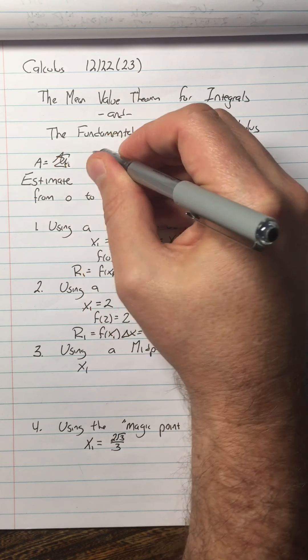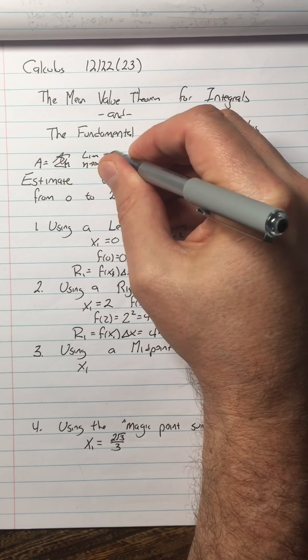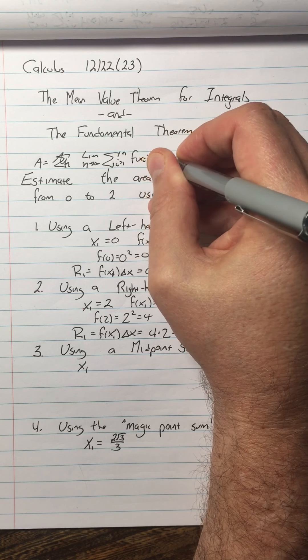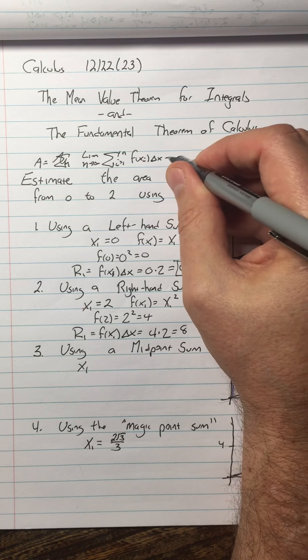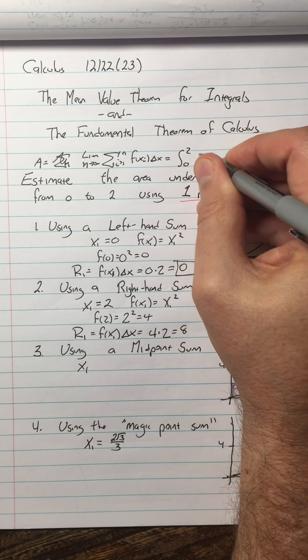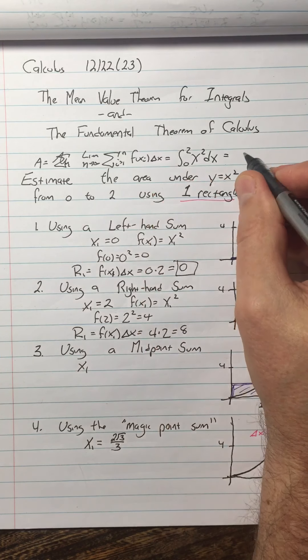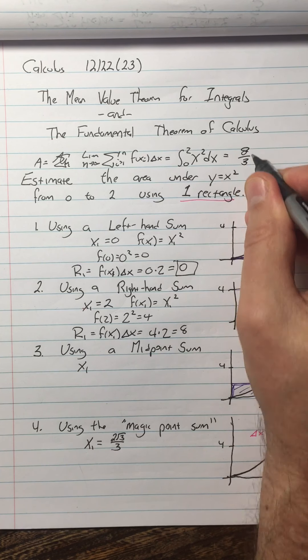We figured out before that the true area under this curve is the sum, sorry, it's the limit as n approaches infinity of the sum from i equals 1 to n of f of x sub i delta x, which we also call the integral from 0 to 2 of x squared dx. This is just a name. We worked this out. We know this area is equal to 8 thirds.